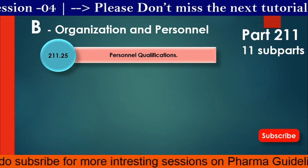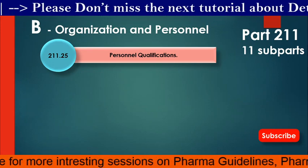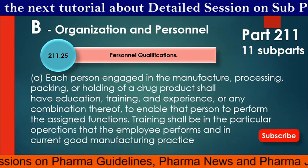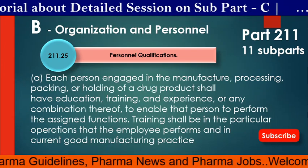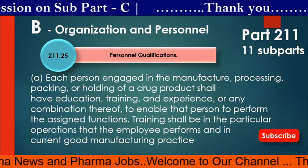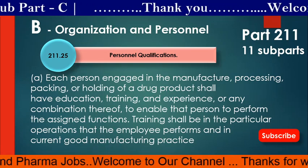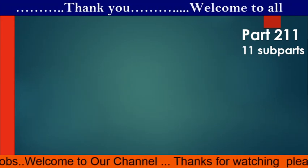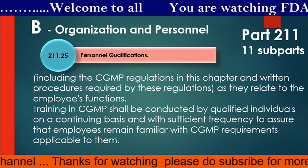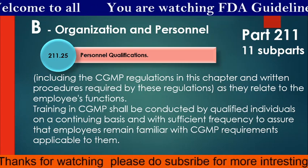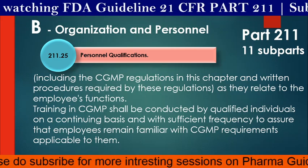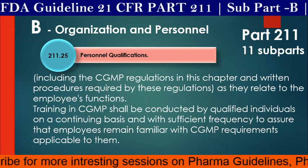Next topic is 211.25 Personnel Qualifications. Personnel means those who are going to work in a pharmaceutical organization. Each person engaged in the manufacturing, processing, packing or holding of a drug product shall have education, training and experience, or any combination thereof, to enable that person to perform the assigned functions. Training shall be in the particular operation that the employee performs and in current Good Manufacturing Practice, including CGMP regulations and written procedures required by these regulations.